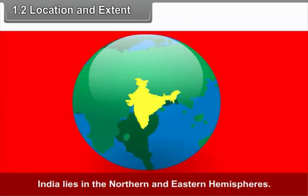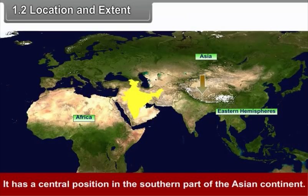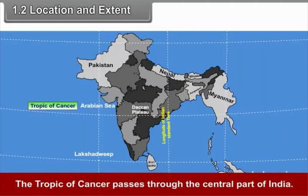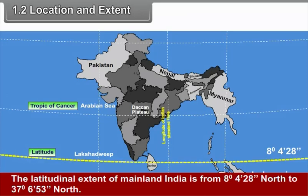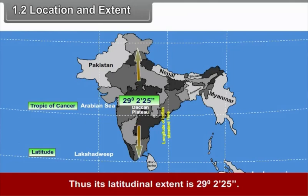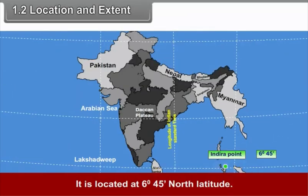India lies in the northern and eastern hemispheres. It has a central position in the southern part of the ancient continent. The Tropic of Cancer passes through the central part of India. The latitudinal extent of mainland India is from 8 degrees 4 minutes 28 seconds north to 37 degrees 6 minutes 53 seconds north, giving a latitudinal extent of 29 degrees 2 minutes 25 seconds. The southernmost tip of India is Indira Point in the Nicobar Islands, located at 6 degrees 45 minutes north latitude.